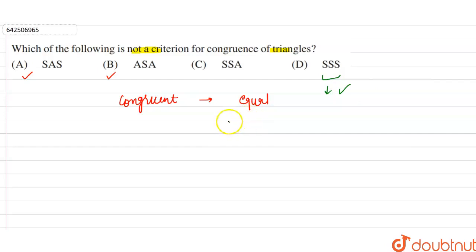So we can say that there is no such criteria SSA, as the angle is not included between the two sides of the triangle. So we can say that the correct option is option C.